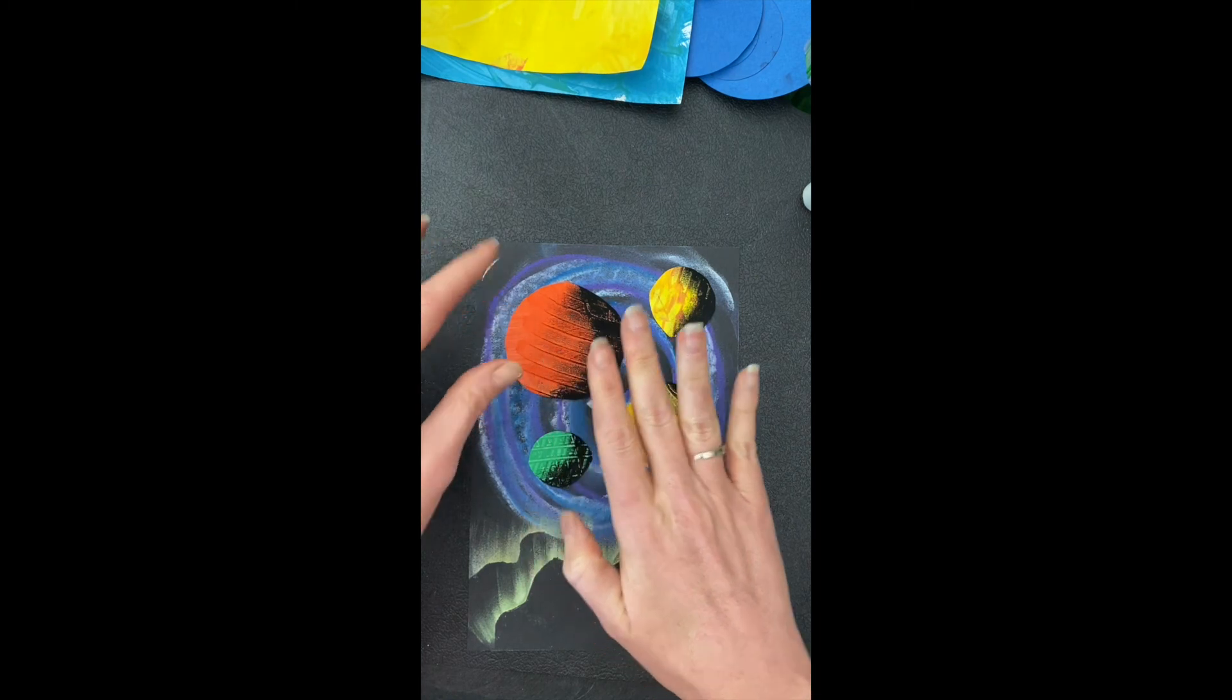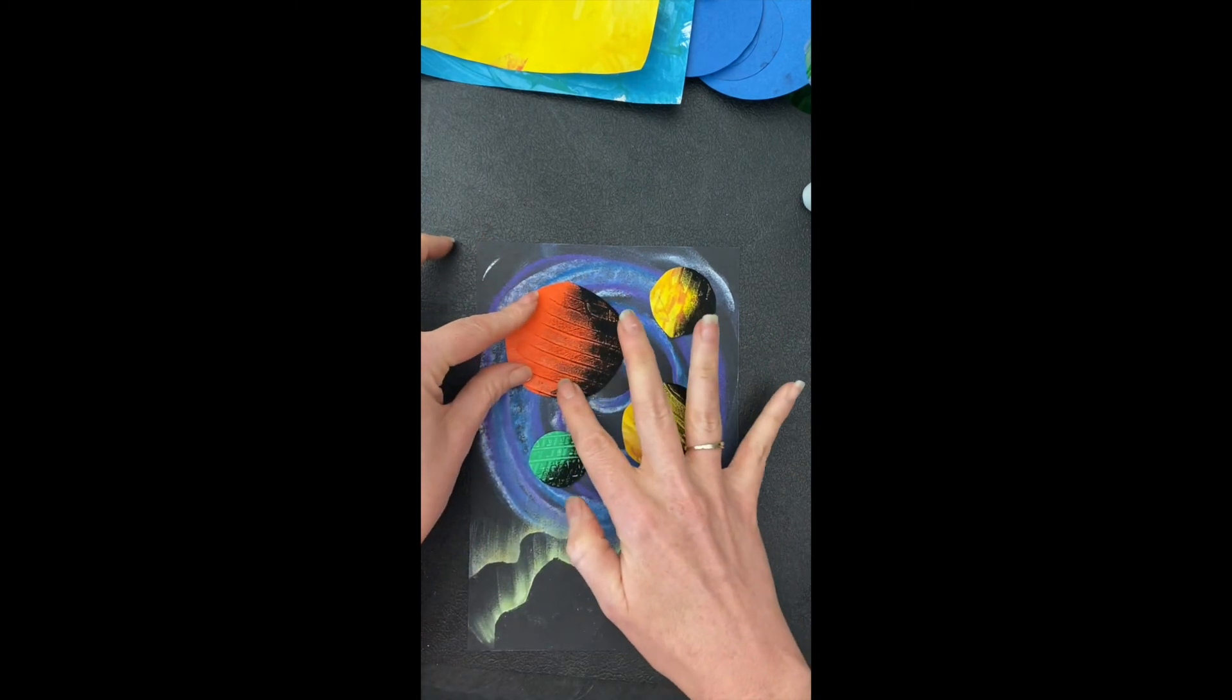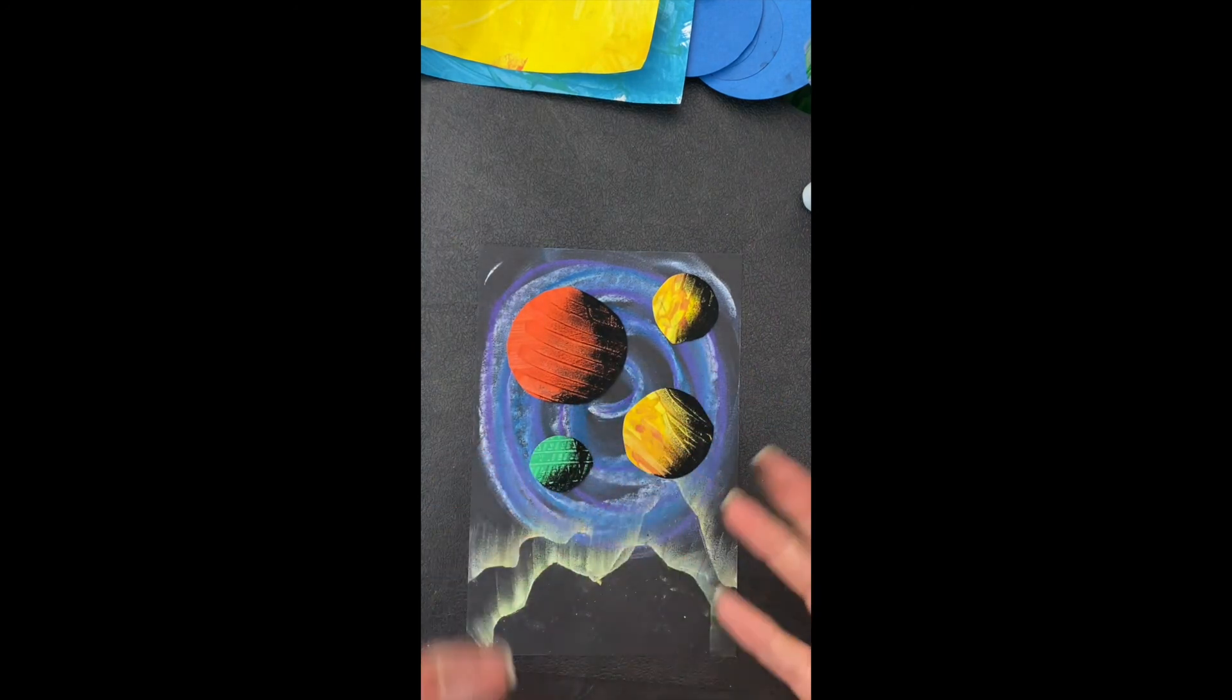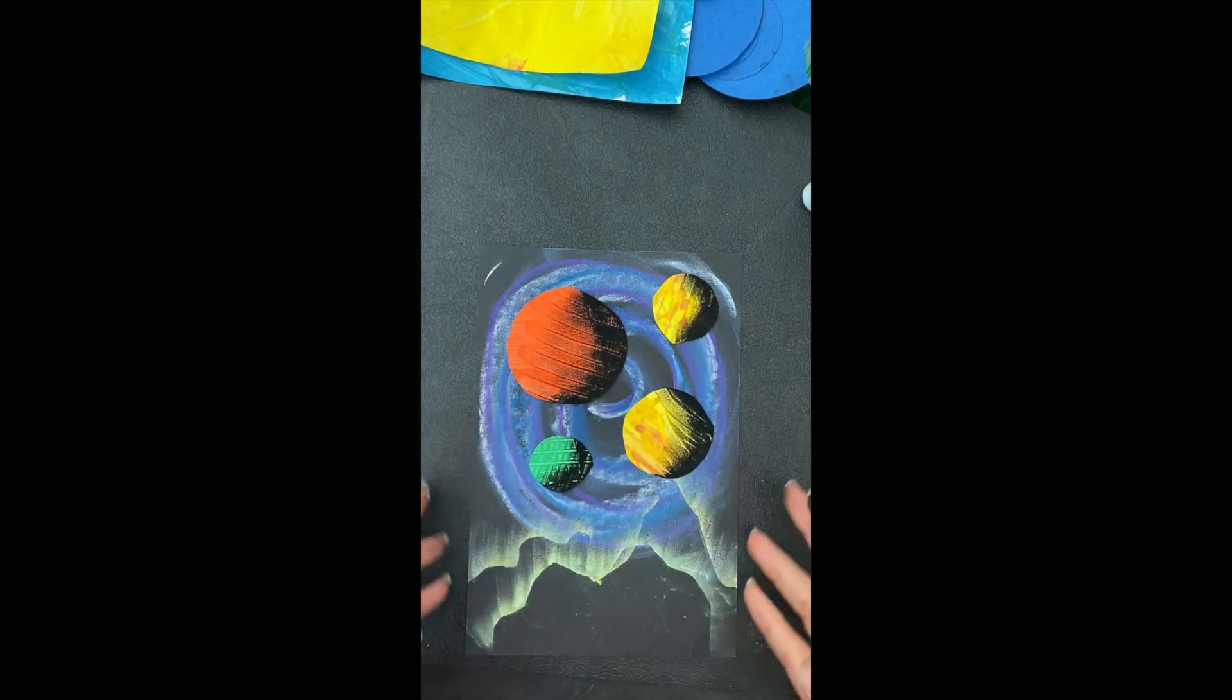Because if we rub this down and massage it, we're going to spread chalk everywhere. We don't want that. So just kind of tap it down. And if it pops up on the edges, it gives it that extra illusion. So that's fine. So go ahead and add all those.